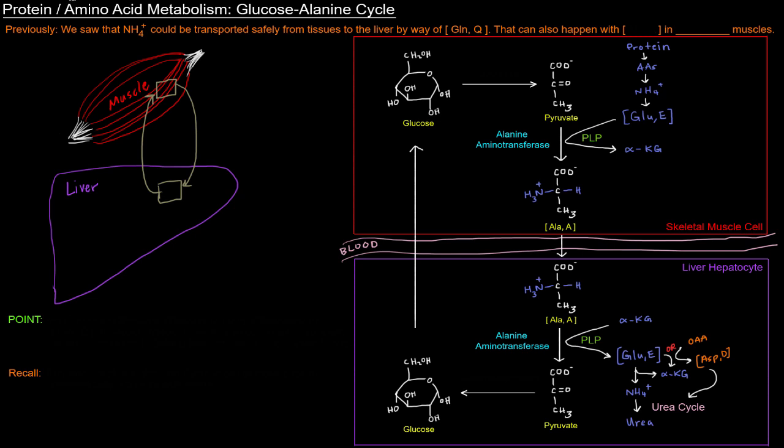Now that doesn't have to happen exclusively with glutamine. It can also occur with another amino acid, alanine, and that alanine is specifically coming from the skeletal muscles. So in the muscle we're going to be breaking down proteins and take amino groups from the muscle out through the blood to the liver, and we're going to have a little cycle here.